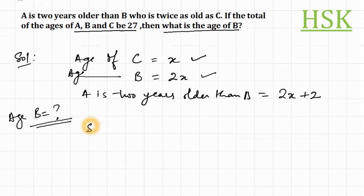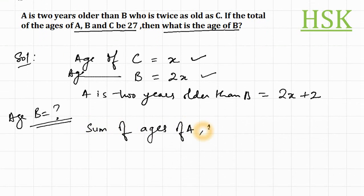So sum of ages of A, B and C is equal to 27. This means that 2X plus 2, that is the age of A, plus 2X, that is the age of B, plus X, that is the age of C is equal to 27.